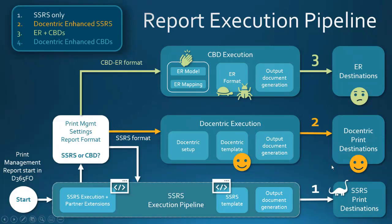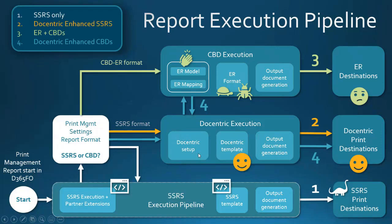Let's see how this fourth execution pipeline looks. You still select the SSRS format in print management — it will route execution through Docentric. Based on the Docentric setup, Docentric will figure out whether you have selected the Docentric template for CBD data source or the Docentric template for SSRS data source. If CBD format is in the game, Docentric will go to electronic reporting to pick up the correct model as configured in Docentric setup. You will be able to design your electronic reporting model and mapping. Docentric knows how to execute that model and will combine the resulting data source with our template, going through our document generation to our known print destinations.